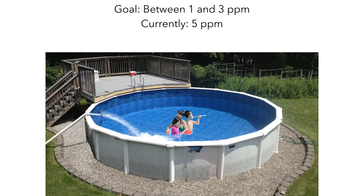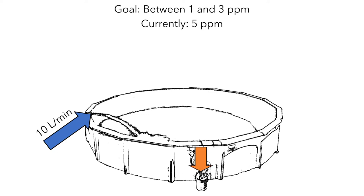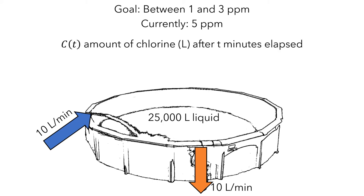So you start pumping fresh water into the pool while simultaneously pumping out the overchlorinated water. You're pumping in fresh water at a rate of 10 liters per minute, and in order to keep the water level the same, you pump the chlorinated water out at a rate of 10 liters per minute. The pool holds 25,000 liters of liquid. Let's write c(t) to represent the amount of chlorine in liters in the pool after t minutes have elapsed. We want to write a differential equation to describe c', the rate at which the amount of chlorine in the pool is changing.